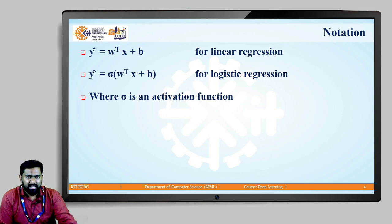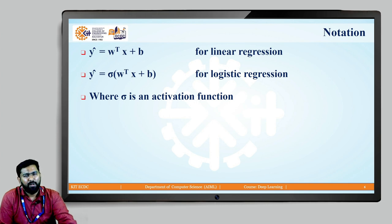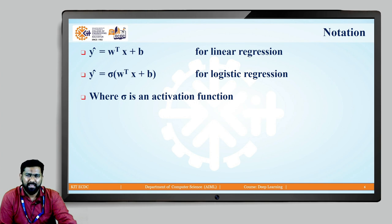When we pass the input feature vector x through the model, we get a prediction y-hat. Y-hat is calculated as w-transpose x plus b, where x is the input feature vector, w is the weight matrix, and b is a constant called bias or DC value. That is what we have seen for a linear regression problem. For a logistic regression problem, which is a classification problem, we have to introduce non-linearity. So y-hat equals sigma of w-transpose x plus b, where sigma is an activation function that introduces non-linearity.